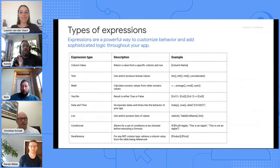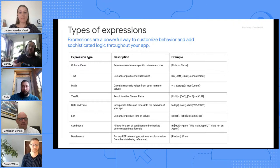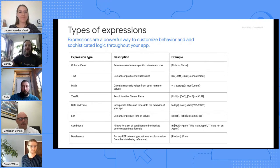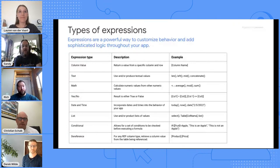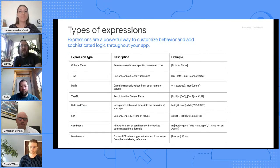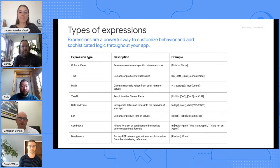If you think of all the expressions and break them down into categories, the most common groupings are: first, column values — the square brackets allow you to directly reference a value somewhere in your application. Second, text expressions like concatenate — AppSheet actually does this automatically if you have first name and last name columns, it will automatically create a full name column. There are also functions to manipulate strings like LEN, trim, or substring.